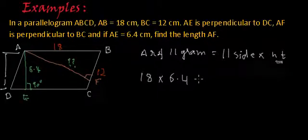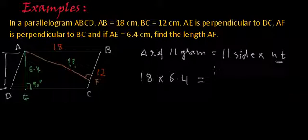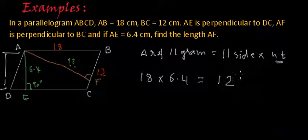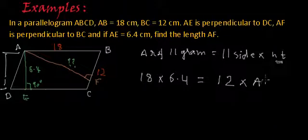And this will be equal to, if I take another set of parallel sides, which are AD and BC. So this will be equal to the length of the parallel line. Length of BC is 12 centimeter multiplied by height. Height is AF.